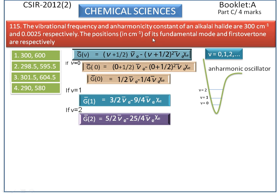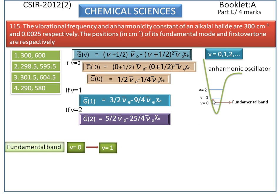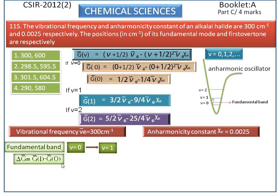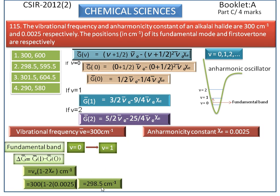The question is: what are the positions of its fundamental mode and first overtones? The fundamental mode is the energy of transition from the ground state to the first excited state, as you can see clearly. We subtract the energy of the ground state from the energy of the first excited state, giving the formula nu-e into (1 minus 2 chi-e). Substituting both values — vibrational frequency and anharmonicity constant — we get the value of 298.5 per centimeter.